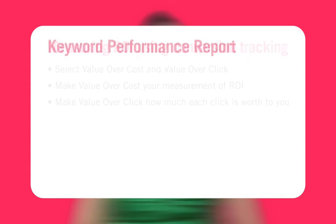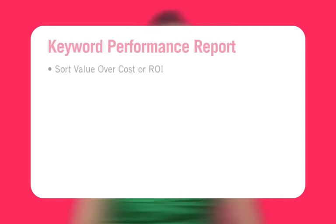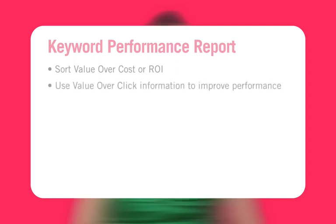After running a keyword performance report, you can sort your results by value over cost or ROI and use the value over click information to guide your bids to improve the performance of your account.